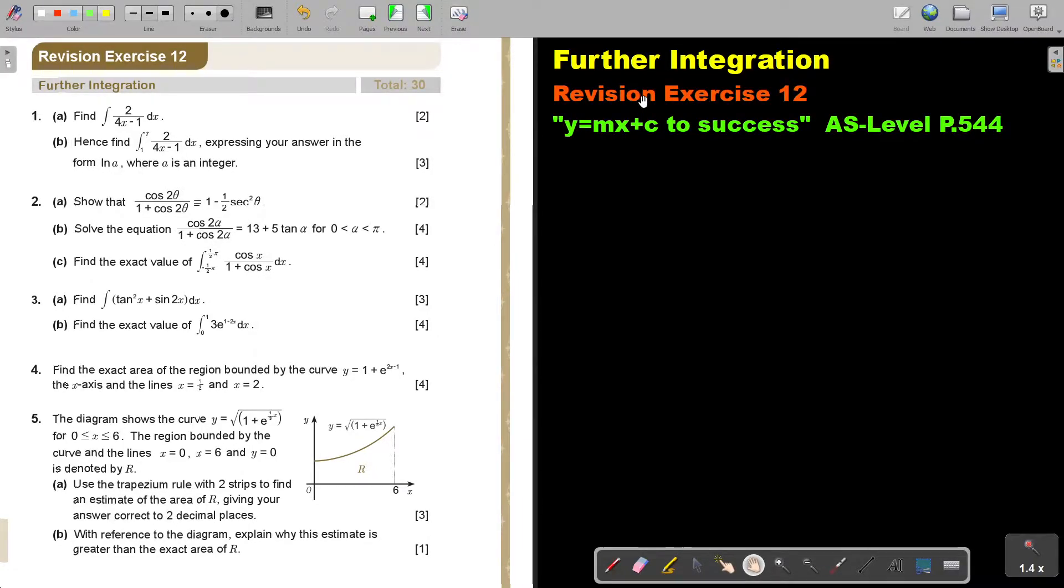In this video, we are going to continue with Revision Exercise 12. In this one, we will do part 2. You will find this on page 544 in the Namibia AS level mathematics textbook Y equals MX plus C to success. So in this video, we're going to do 3, 4, and 5.